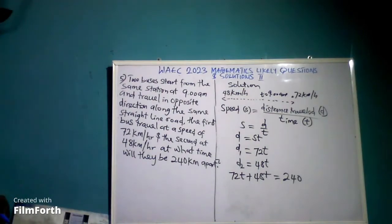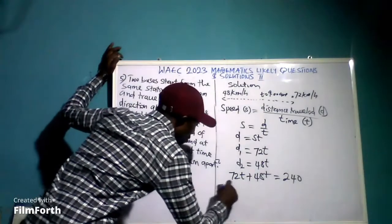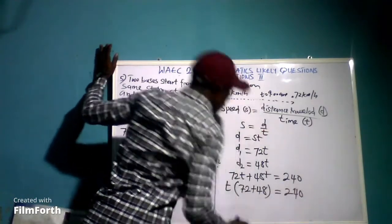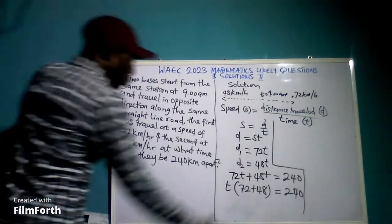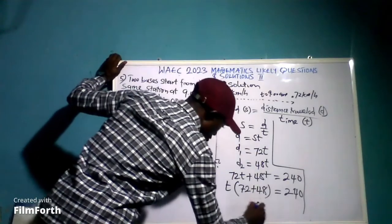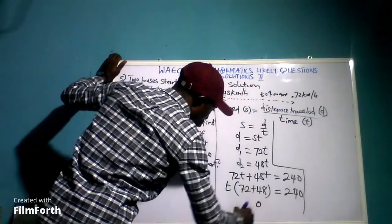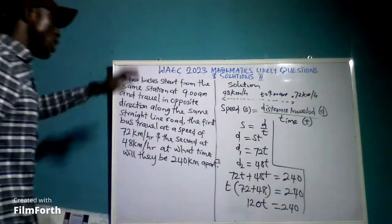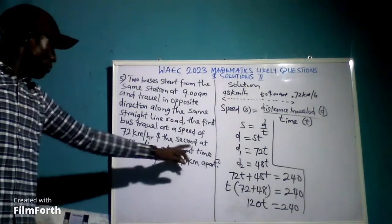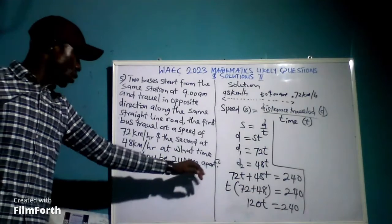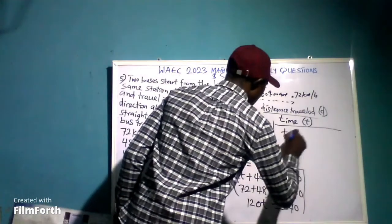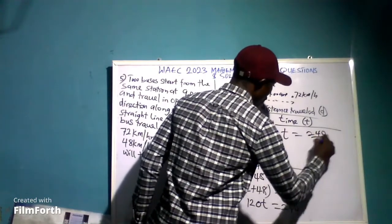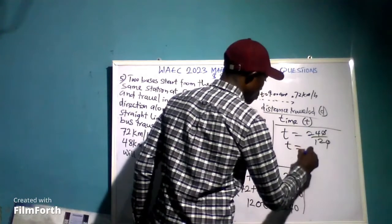Factoring out T, we have T open bracket 72 plus 48 close bracket equals 240. Since 72 plus 48 equals 120, we have 120T equals 240. Dividing both sides by 120, T equals 240 over 120, so T equals 2 hours.